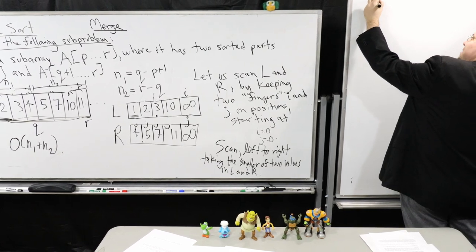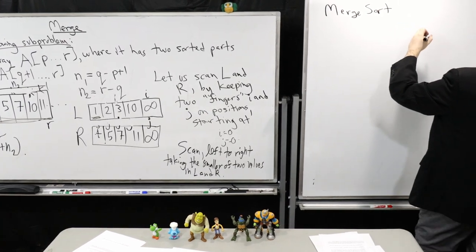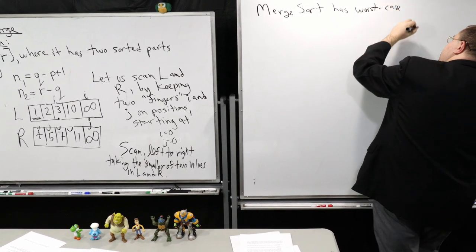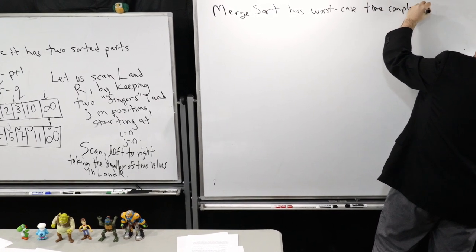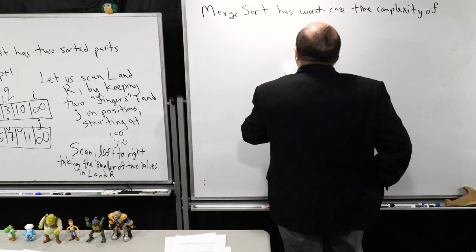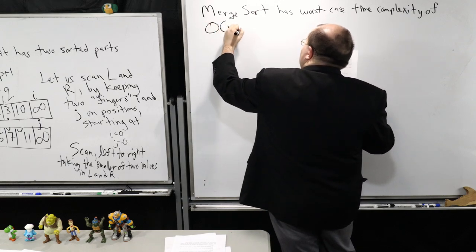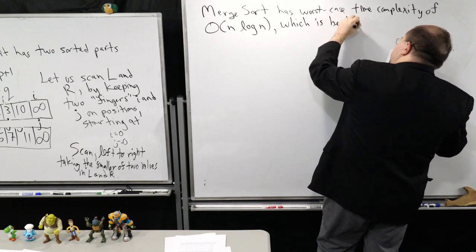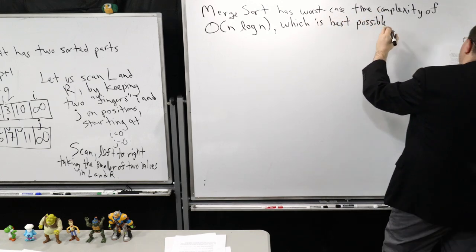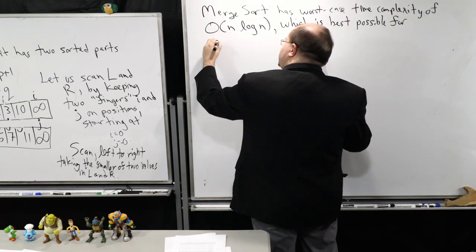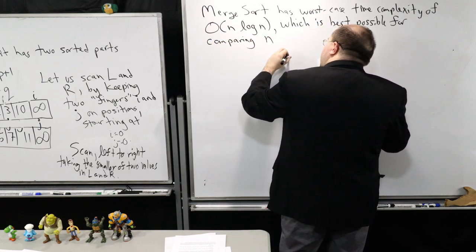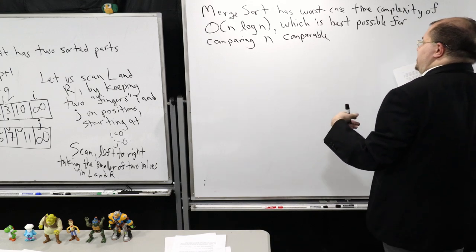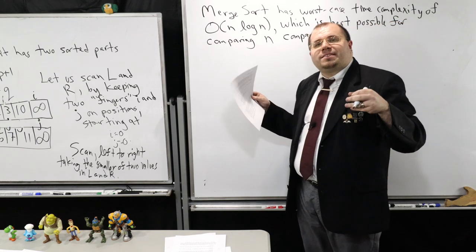Merge Sort has a worst case time complexity of big O of N log N, which is best possible for comparing N comparable objects. I must stress that this statement is true for the most general types of objects you could compare — comparable ones. These can be numbers, strings, and so on. But in more specialized cases, this statement may not necessarily be true.